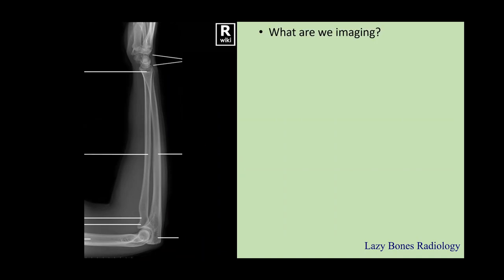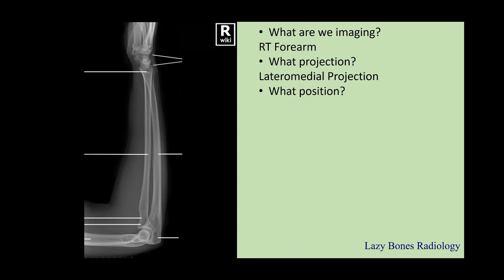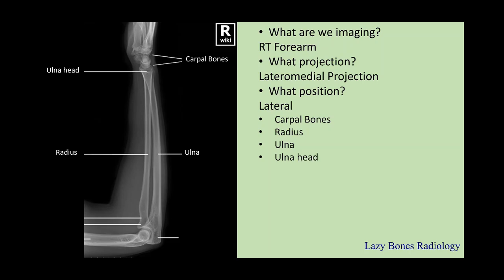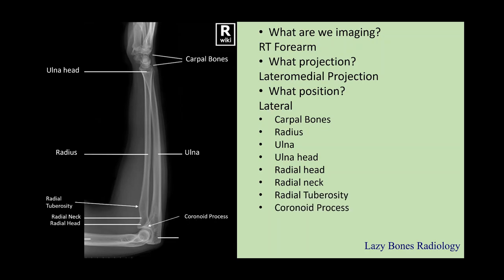Now let's practice. What are we imaging? This is the right forearm. What is the projection? Lateral medial projection. What is the position? Lateral. Now let's practice some anatomy. These are your carpal bones, superimposed. The radius, which is located on the lateral side. Next is the ulna, which is on the medial side. The ulnar head. Next is the radial head, neck, and the tuberosity. Coronoid process. Olecranon process. And the distal humerus.